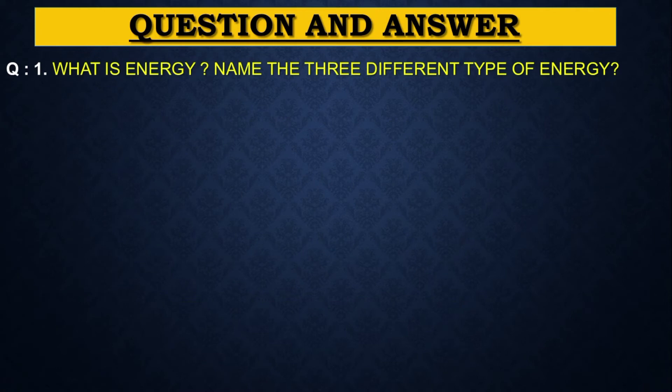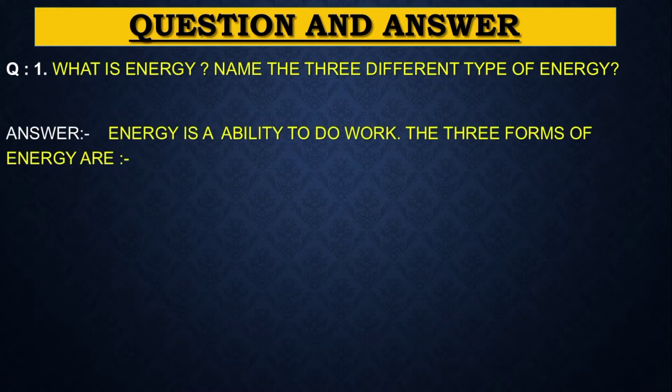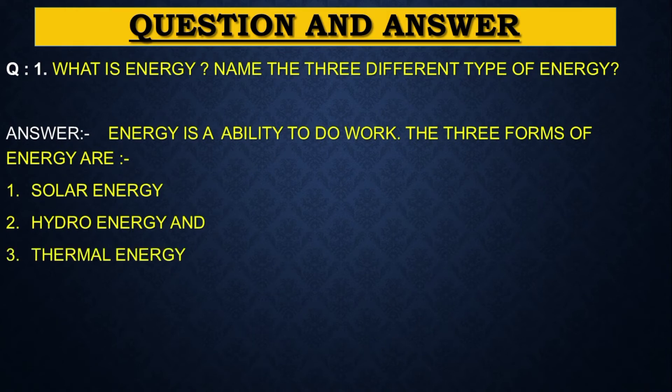Question and answer. Question number 1: What is energy? Name three different types of energy. Answer is energy is the ability to do work. The three forms of energy are first solar energy, second hydro energy, and third thermal energy.